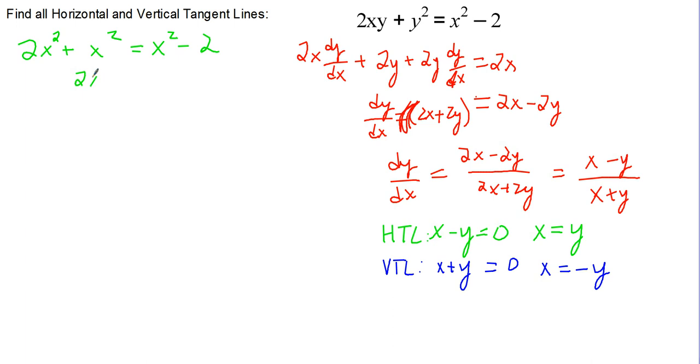Or, 2x squared equals negative 2, or x squared equals negative 1. This has no real solutions, therefore there must not be any horizontal tangent lines for this equation.